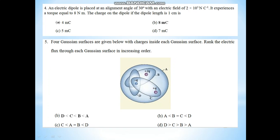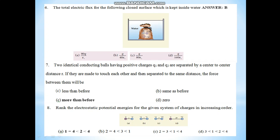The answer is 8 micro coulomb. Next question, fifth question: From 4 Gaussian surfaces given below in the diagram, rank the electric flux through the Gaussian surface in increasing order. Increasing order means smallest to largest values.